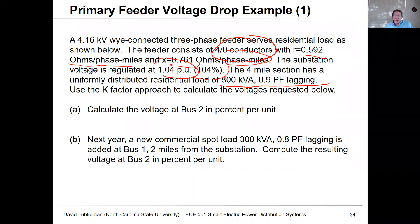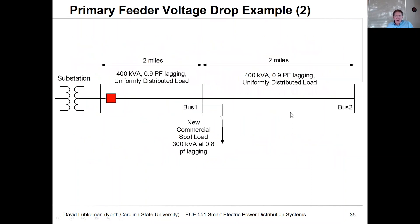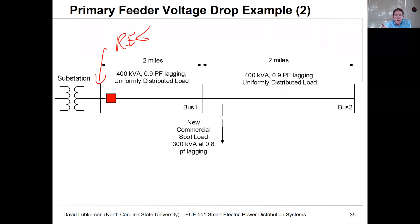What we want to do is make use of the k-factor approach to calculate the voltages requested — specifically, the receiving end voltage in percent per unit. This is the circuit; just ignore the new commercial spot load for now. Basically, we're regulating this voltage at the top of the feeder using a line voltage regulator.